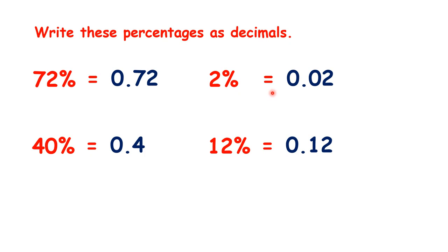So, notice, if it's a single-digit percentage, like it is here with 2%, you use only the hundredths decimal place. Otherwise, you use both the tenths and hundredths.